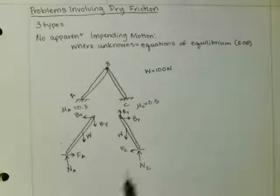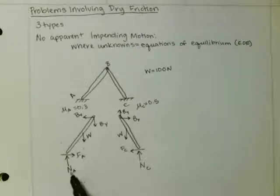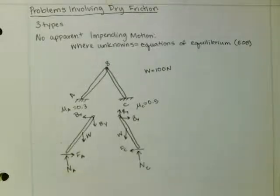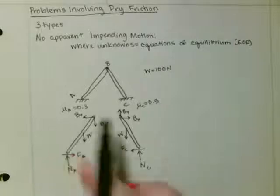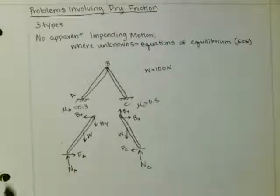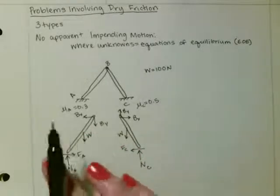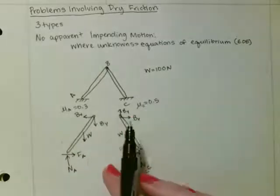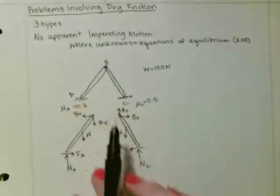So, my unknowns, I've got FA, NA, BX, BY, FC, NC. So I have six unknowns. But I've got two separate free body diagrams, that each have three equations of motion. So I have six equations of motion, sorry, not of motion, of equilibrium.